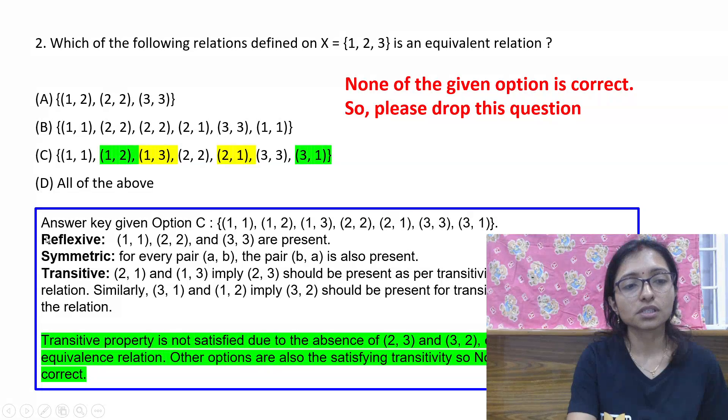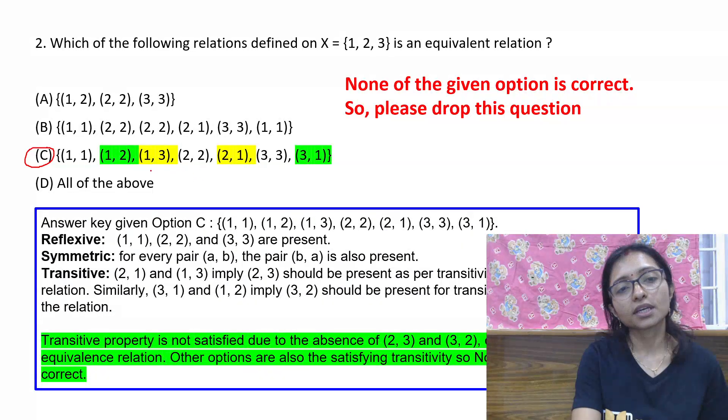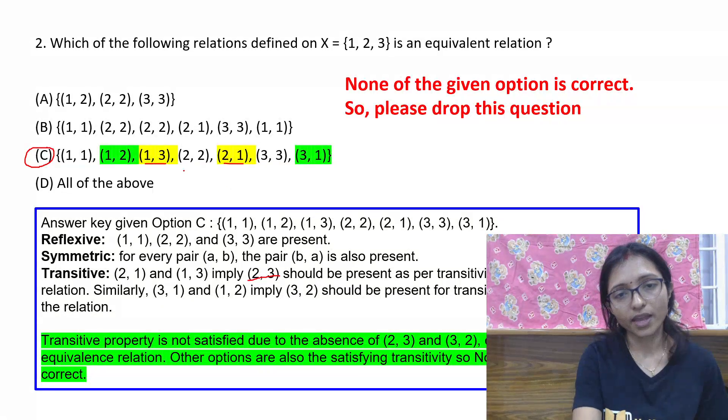The given option is option C. They provide that option C is correct, but option C is also wrong. As you can see, when we are checking this, the pair (2,1) then (1,3) means (2,3) should be present. (2,3) is not there as you can see.